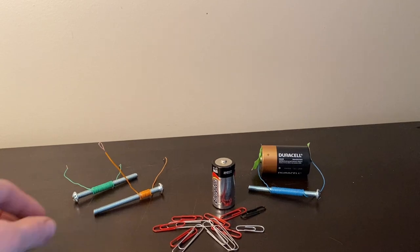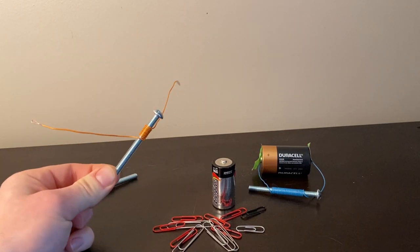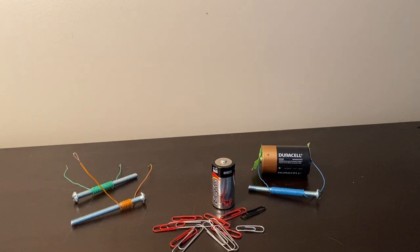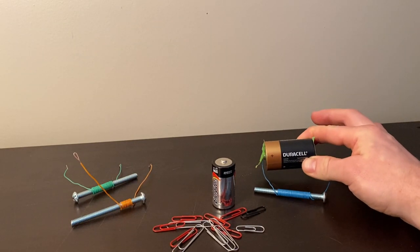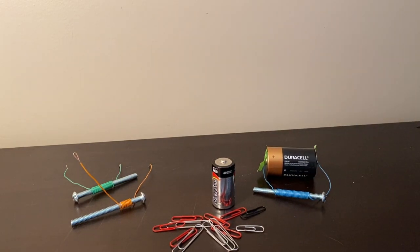So what do we learn from our investigation? What did you notice about the number of loops and how it affected the strength of the electromagnet? When we switched to a larger battery, what did you notice about the strength of the electromagnet?